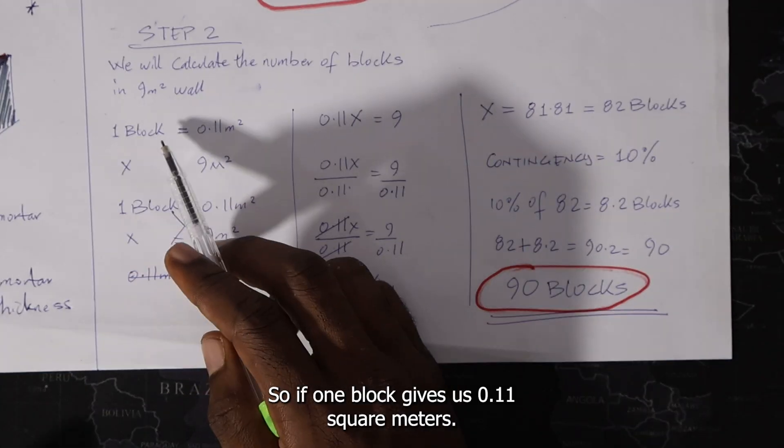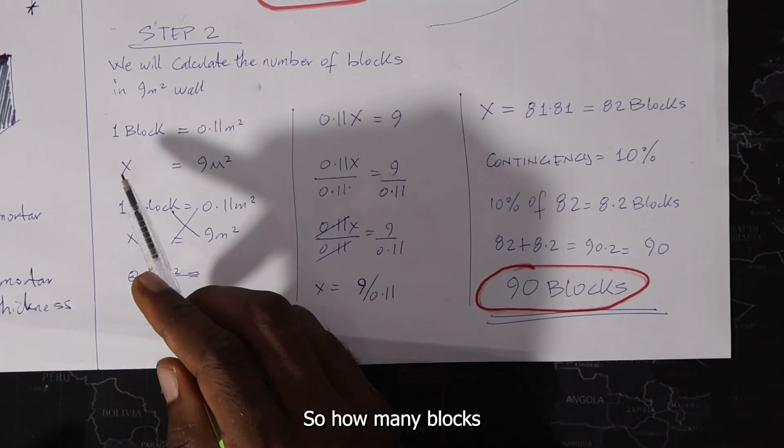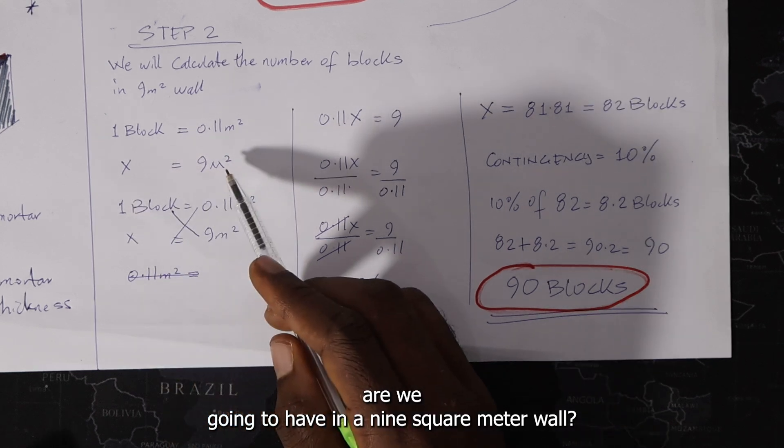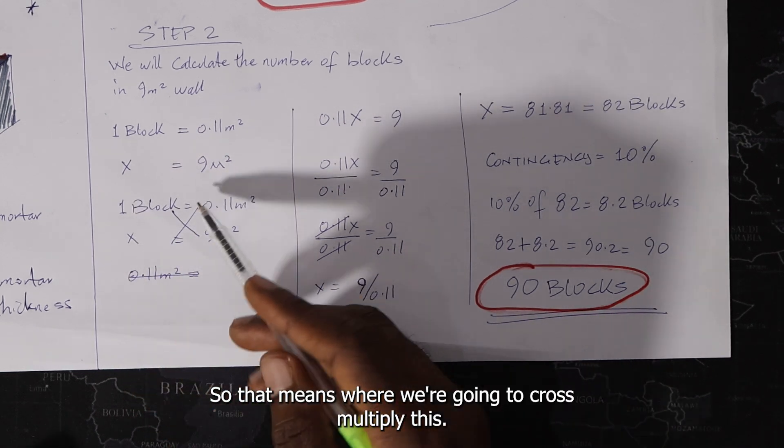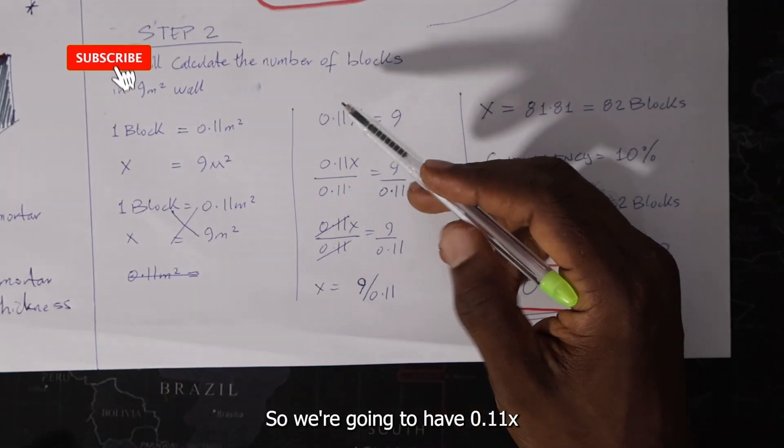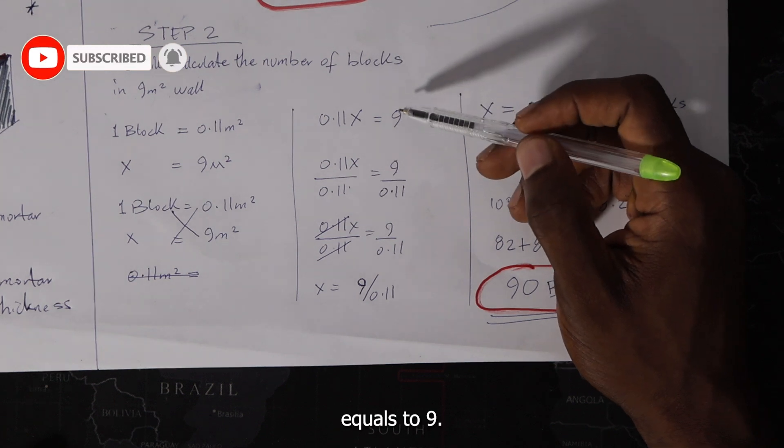So if one block gives us 0.11 square meters, how many blocks are we going to have in a 9 square meter wall? So that means we're going to cross multiply this. So we're going to have 0.11x equals to 9.